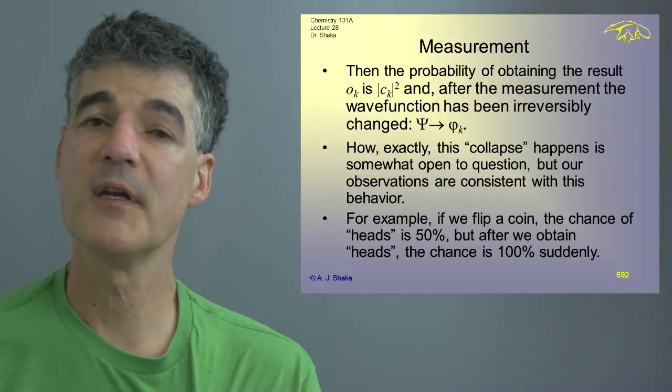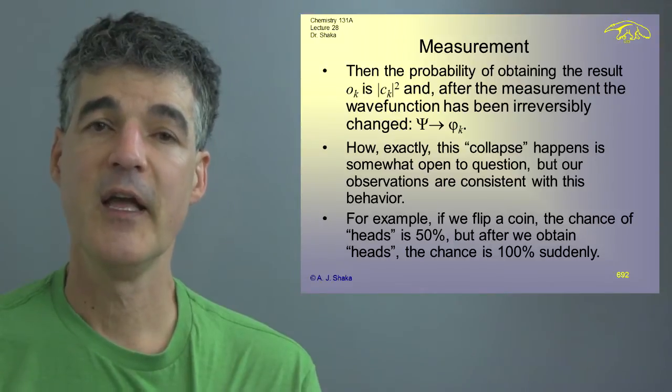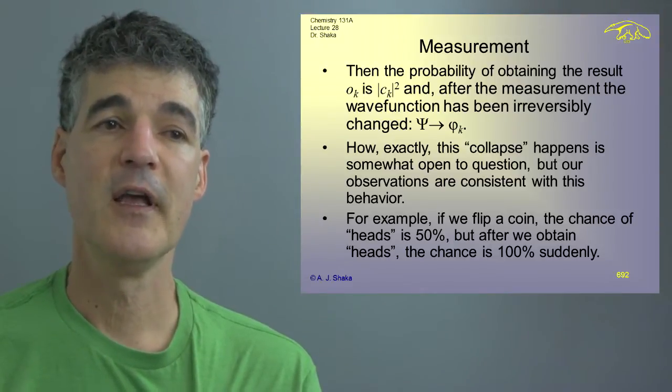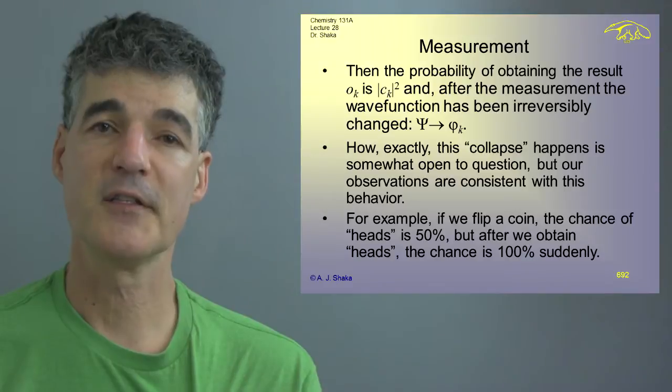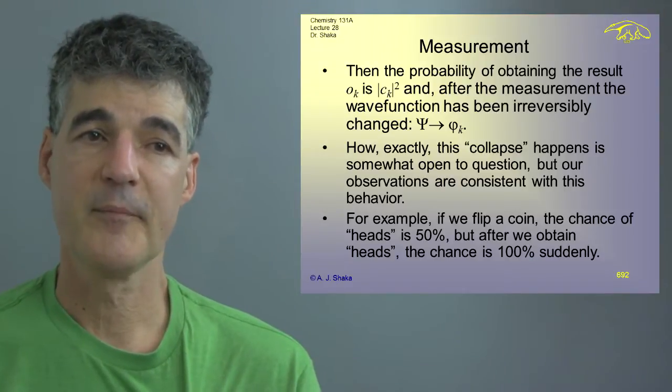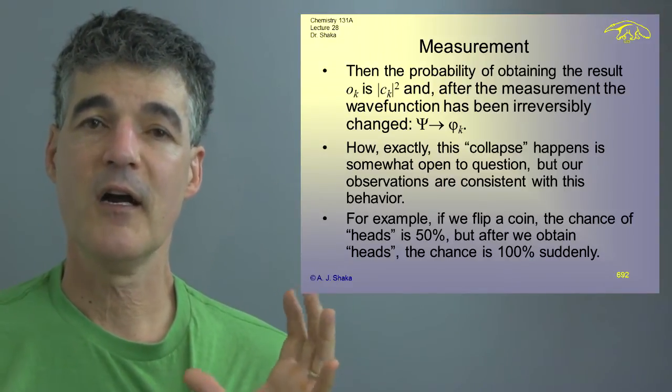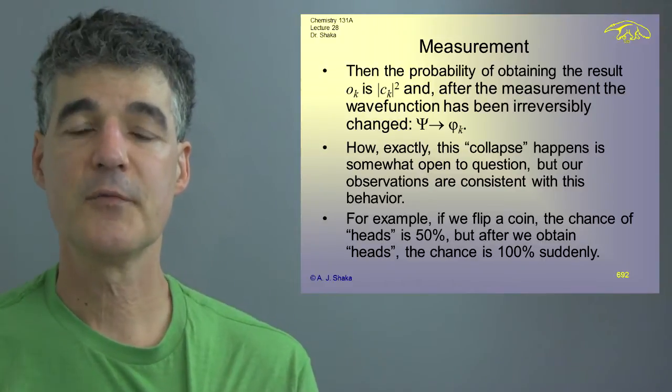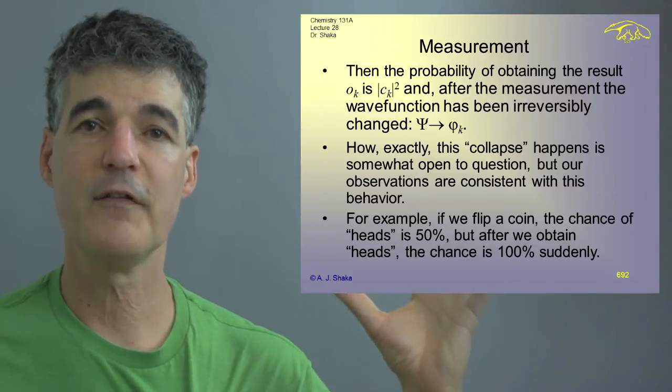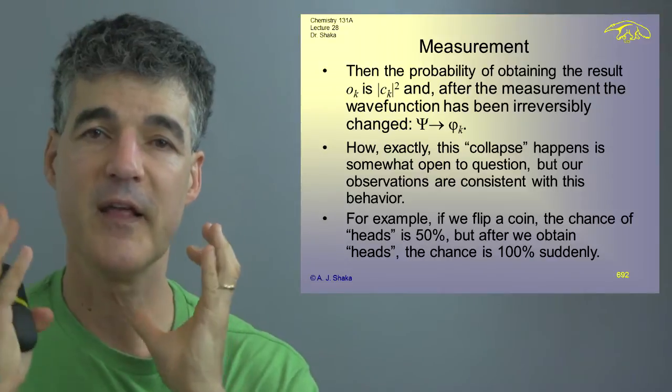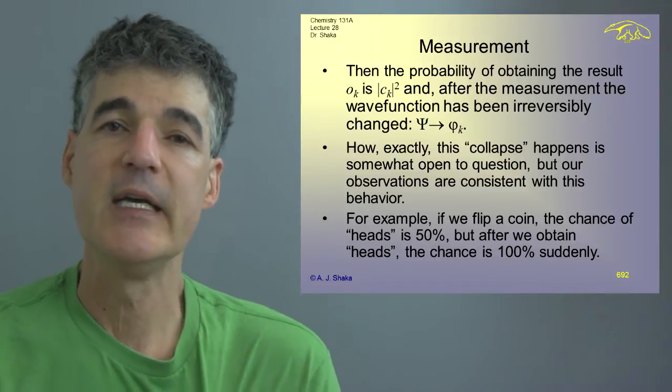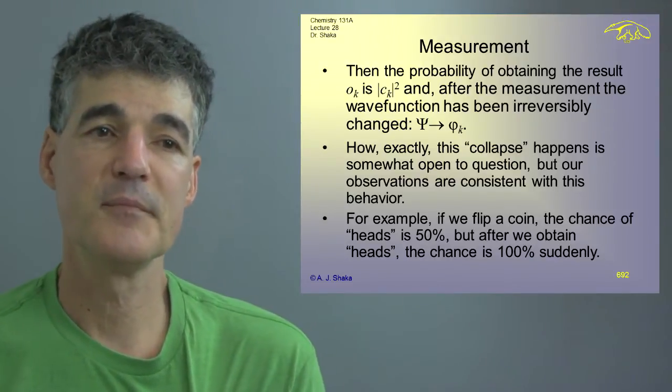And after that, the wave function has been irreversibly changed. And now the wave function has changed to the eigenstate phi sub k. That seems to be kind of a collapse of probability because we had this big thing, the wave function, and then we made a measurement and then it collapsed. And now it's in this state.